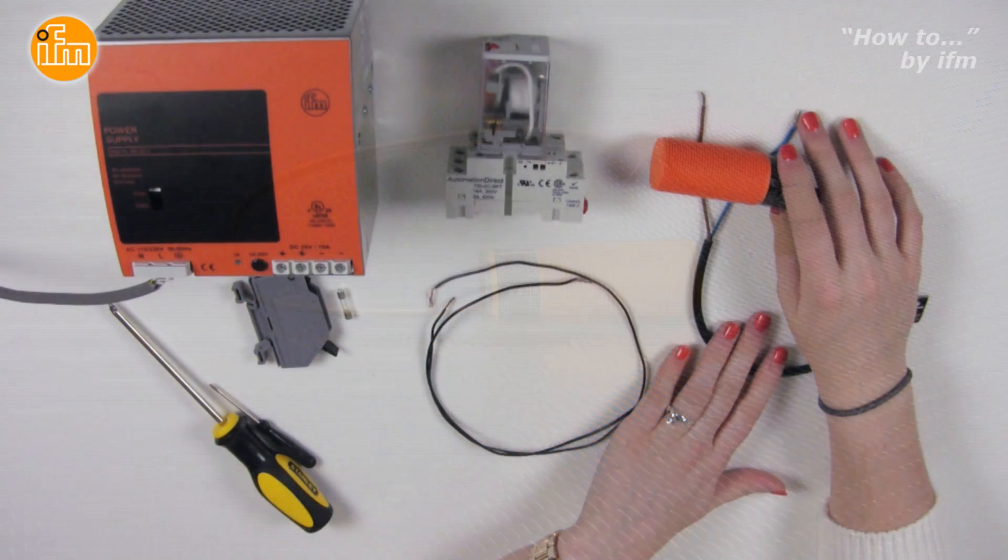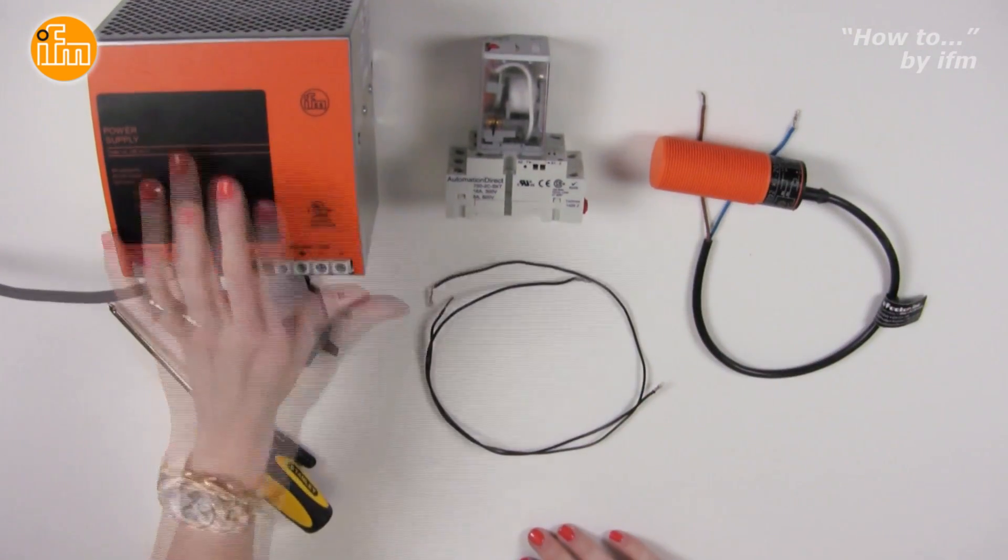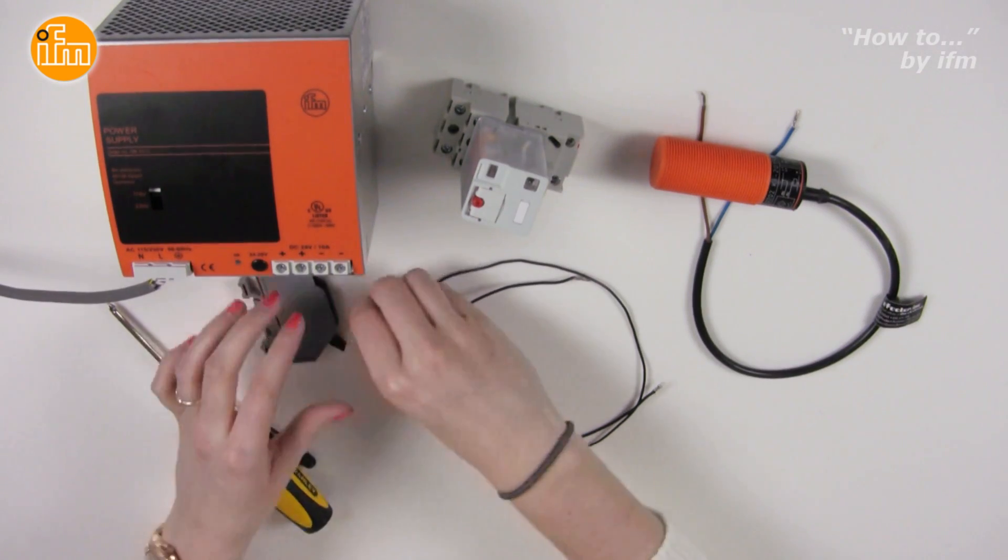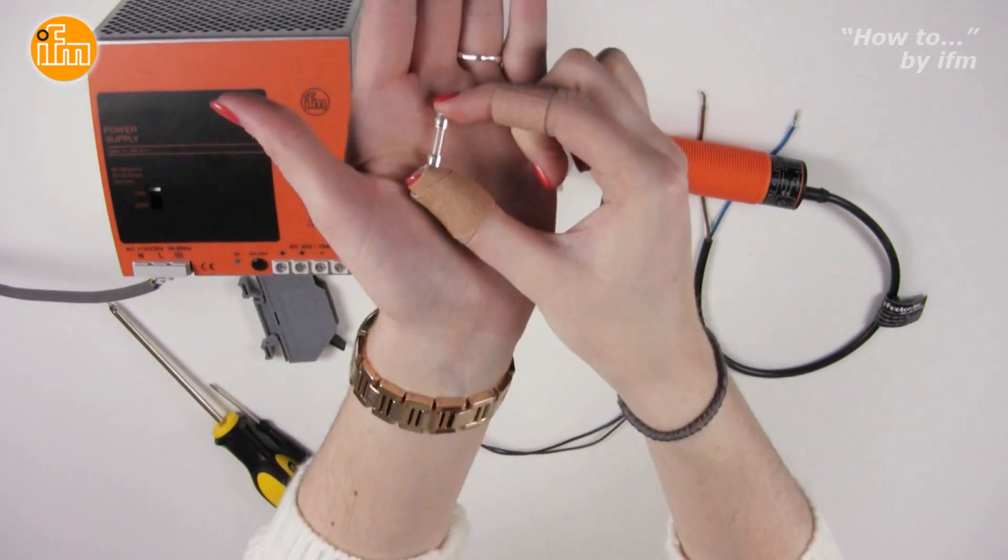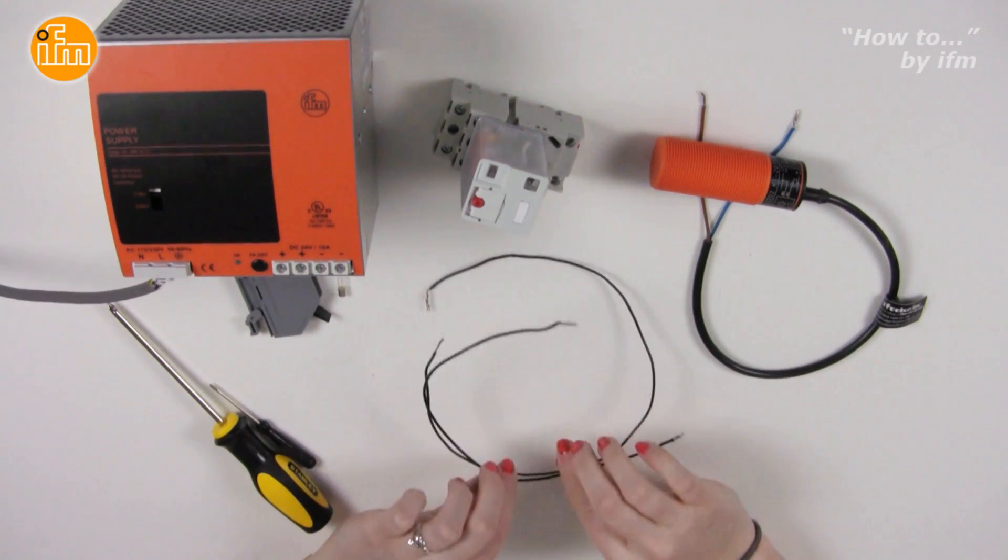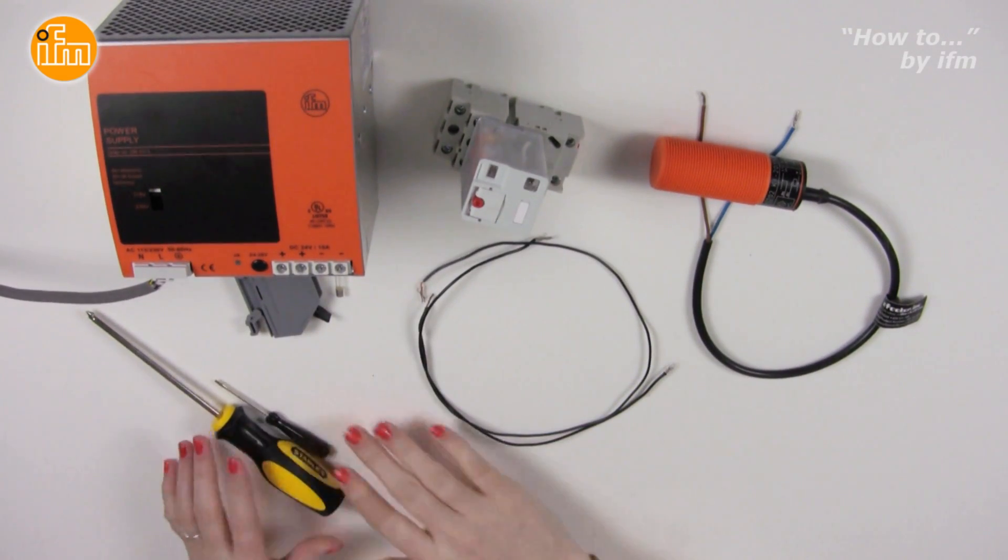To correctly wire the AC sensor, we will need the sensor, a power supply, a relay which will be used as the load, a fuse in a fuse terminal, some spare wires, and appropriate screwdrivers.